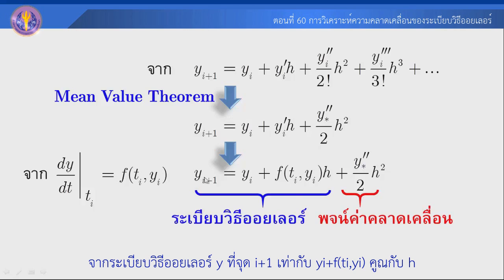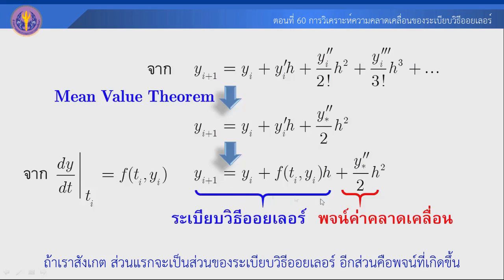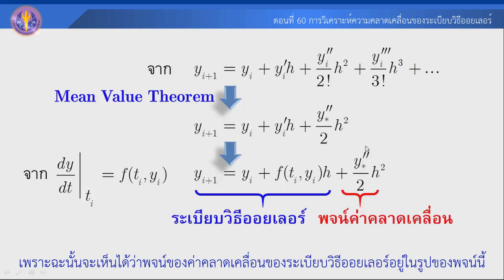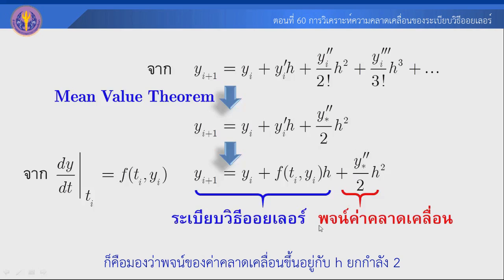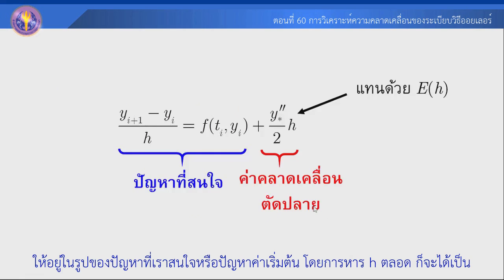จากระเบียบวิธี Euler นะครับ y ที่จุด i+1 เท่ากับ y_i บวกด้วย f(t_i, y_i) คูณด้วย h นะครับ ซึ่ง y prime ตรงนี้ก็คือค่า guide จากนี้ก็จะเป็นค่าคลาดเคลื่อนนั้นนะครับ Here we arrive at the generalized form. This shows how every step we can find the point of view of the error.